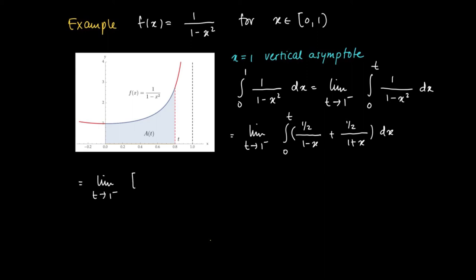Each of these terms has an easy primitive. So 1/2 · 1/(1-x) has as a primitive -1/2 · ln(1-x), and 1/2 · 1/(1+x) has as primitive 1/2 · ln(1+x).